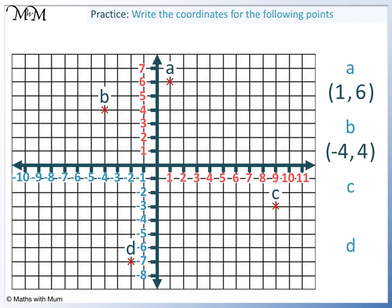Question c. Reading across we have 9. Reading down we have -3. The coordinates are (9, -3).